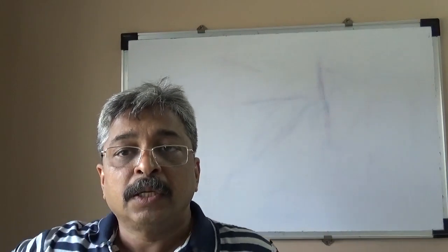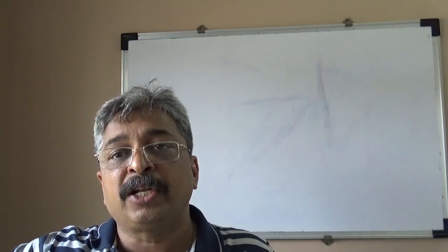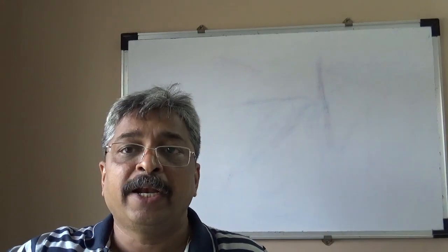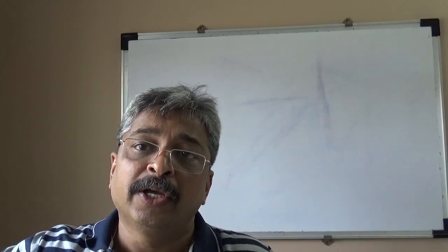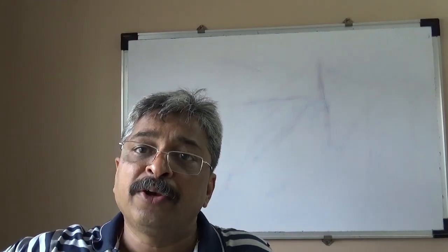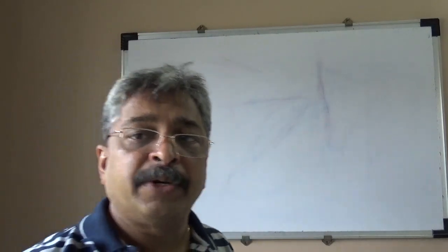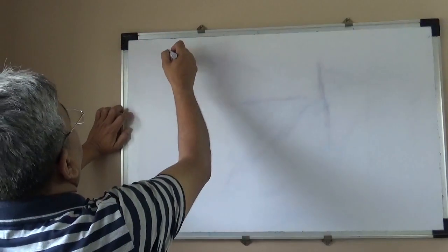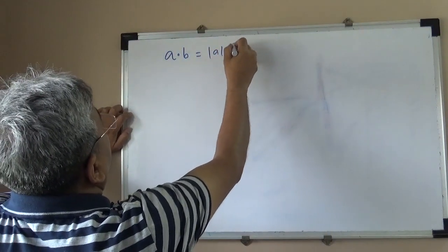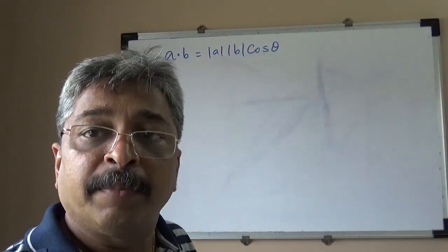Lecture 6. Let us define scalar product. Scalar product of two vectors A and B is defined as a simple scalar — it has to be a scalar and it is not going to be a vector; it is going to be a real number. Scalar product is defined as absolute value of A into absolute value of B into cosine of the angle between them. So, denoted as A dot B equals |A| |B| cos θ, where θ is the angle between A and B.